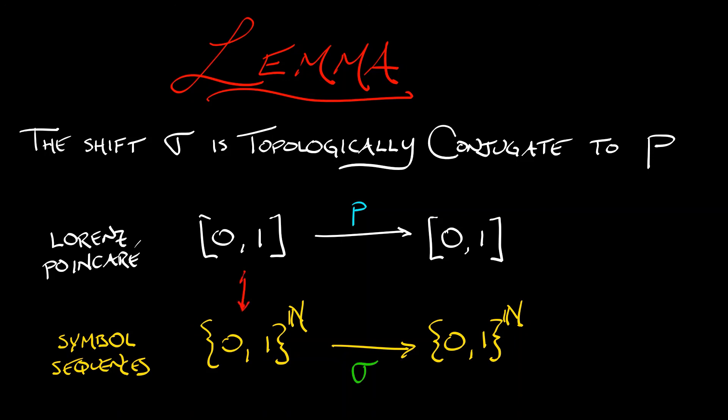Now here's the idea: what I have is a way of going back and forth between the interval from 0 to 1 and the space of binary decimals. This is simply the conversion to a binary decimal, right? Every number between 0 and 1 has a binary decimal, every symbol sequence in 0s and 1s corresponds to some binary decimal. This is, if you like, a homeomorphism. This is really giving you a nice continuous correspondence.